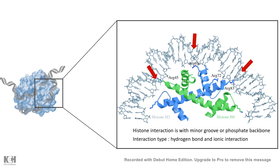The question is how the interaction between the core histone folds and DNA occurs. It turns out that DNA interaction with the histone happens in the minor groove. We know that the minor groove and phosphate backbone are not rich in information, so the histone interaction with DNA is not sequence specific. Also, the interaction type is non-covalent in nature — mostly hydrogen bonds and ionic interactions, and in many cases van der Waals interactions as well.